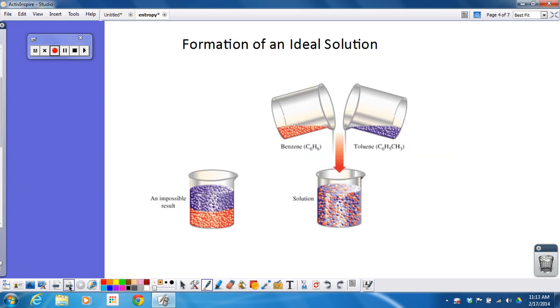So one example would be, if I have this solution, I have benzene, which is red, toluene, which is blue. If I pour these two separate beakers together, we're not going to get this where we have the two liquids just sit there and don't mix at all.